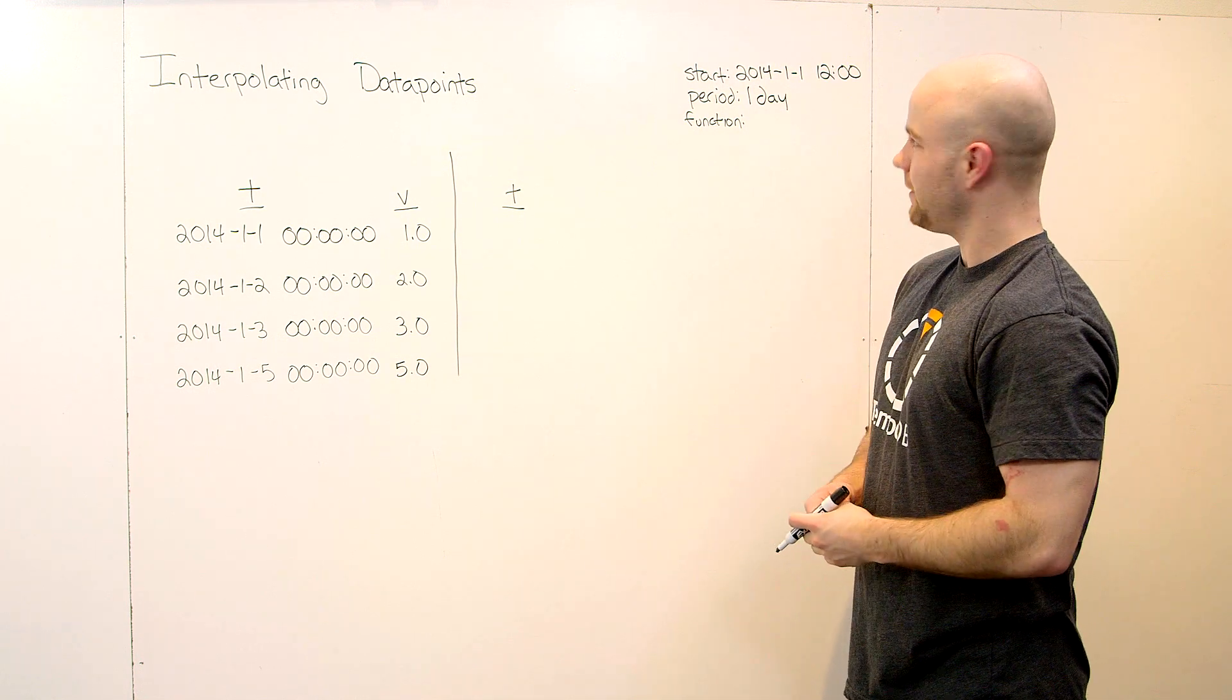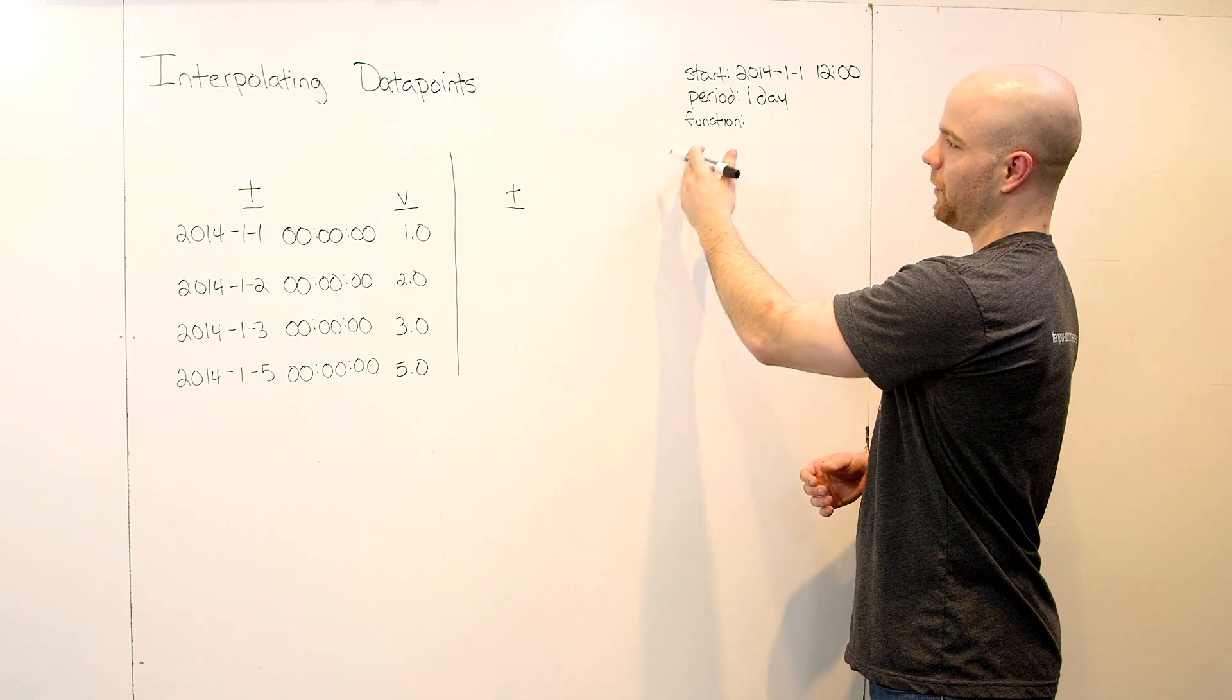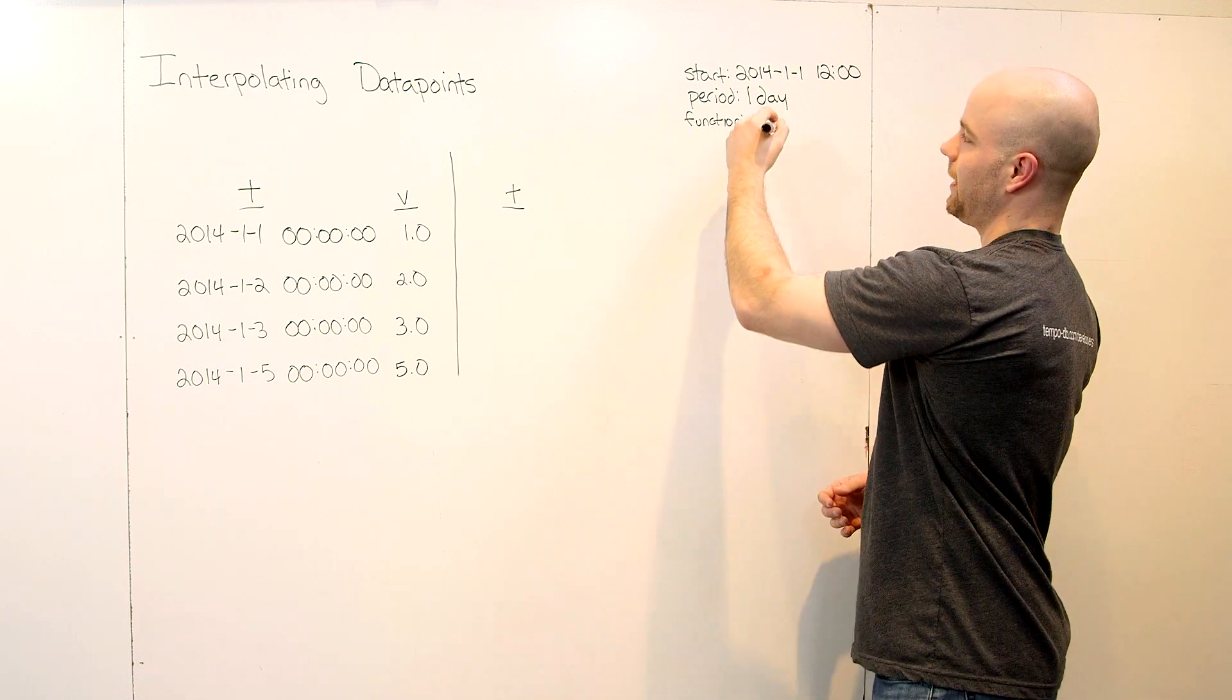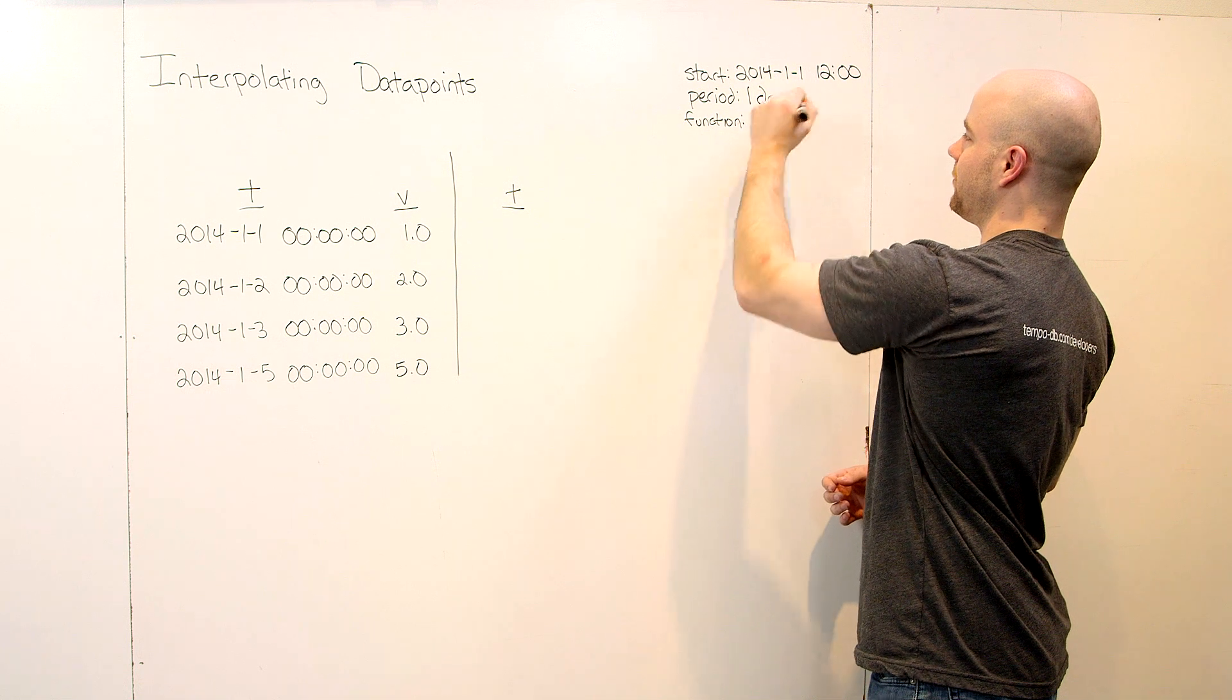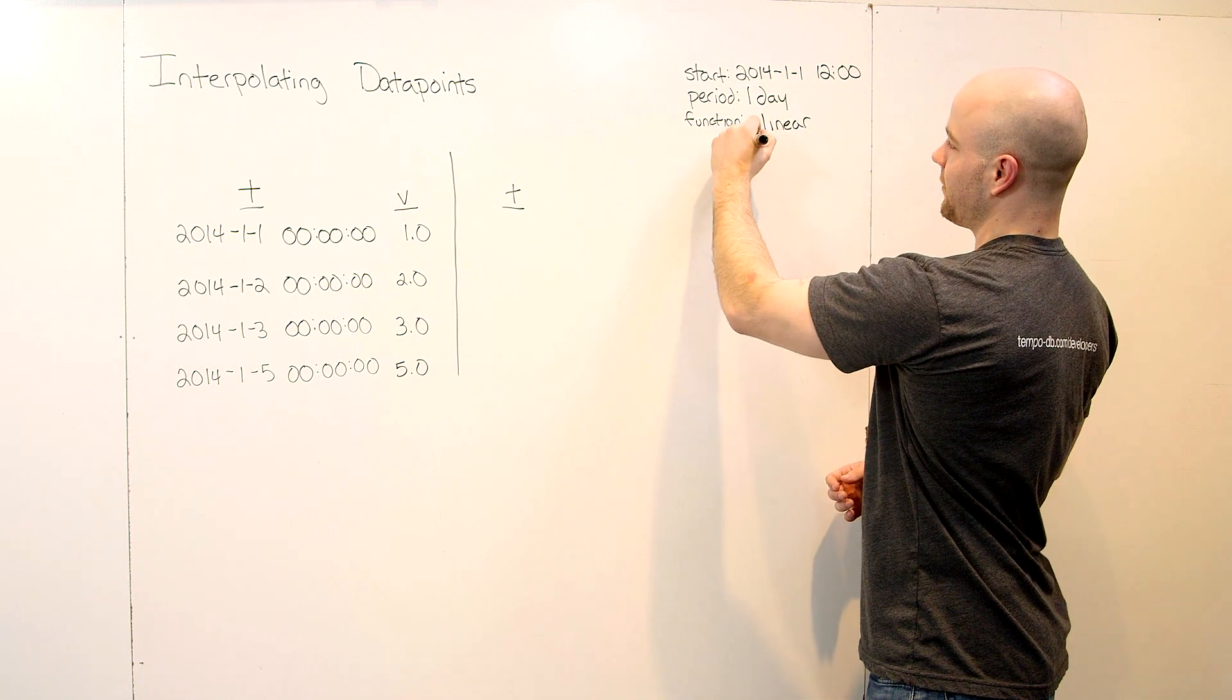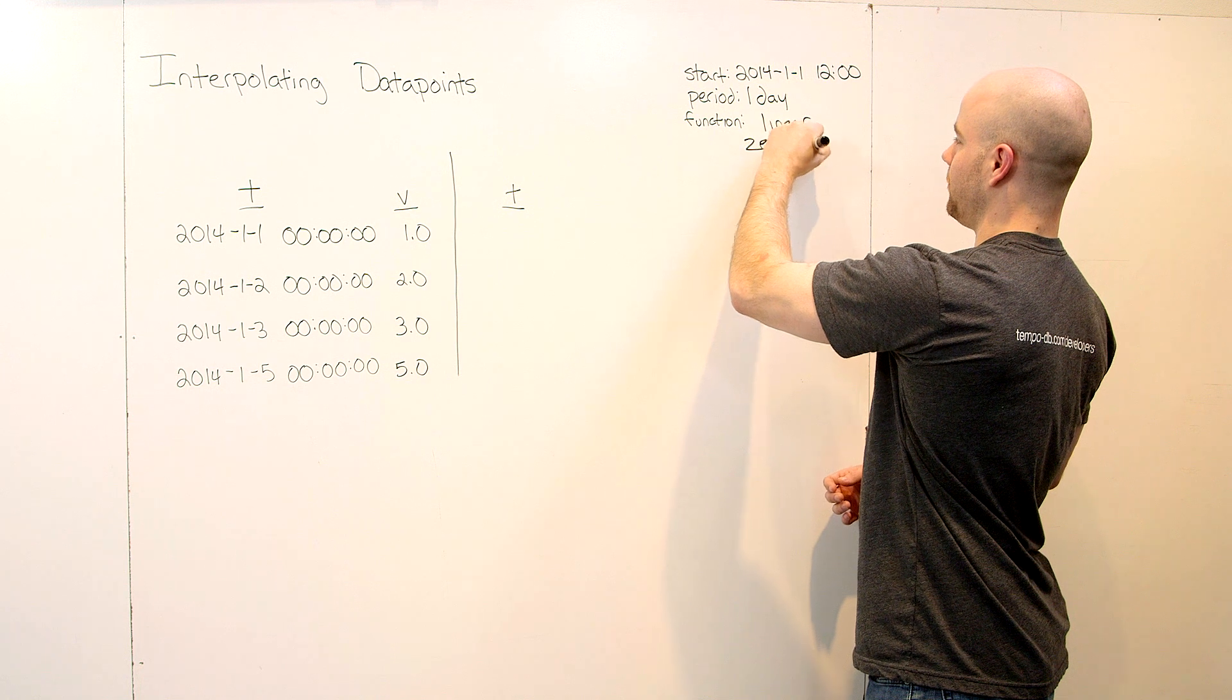Finally, the function is what method we're going to use to interpolate the points. We have two interpolation functions available in TempoDB. The first is linear, and the second is called zero order hold.